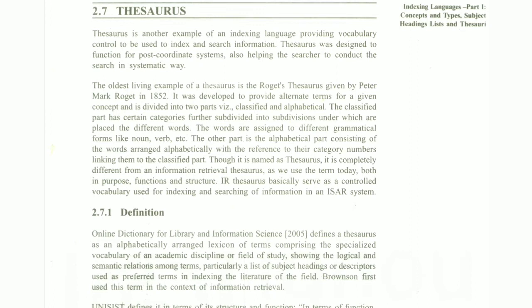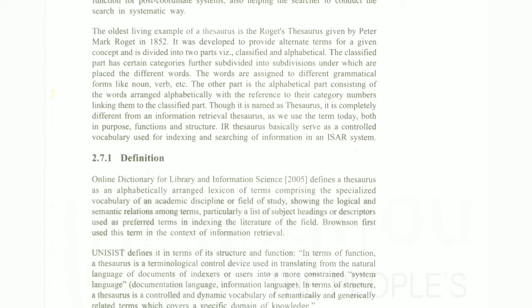The oldest living example of a Thesaurus is the Roget's Thesaurus, given by Peter Mark Roget. It was developed to provide alternative terms for a given concept.